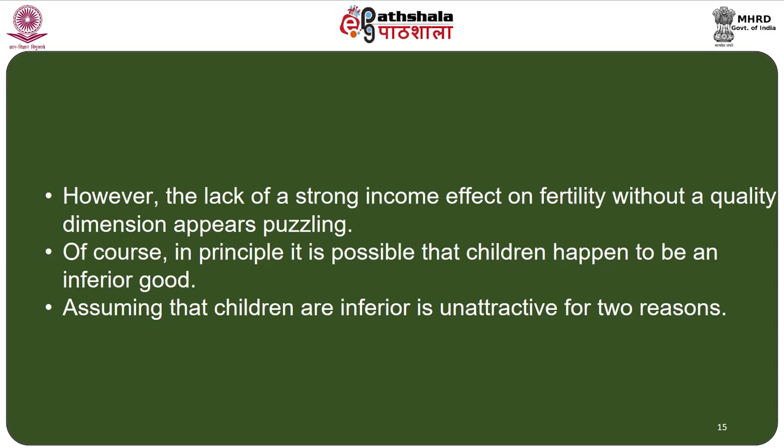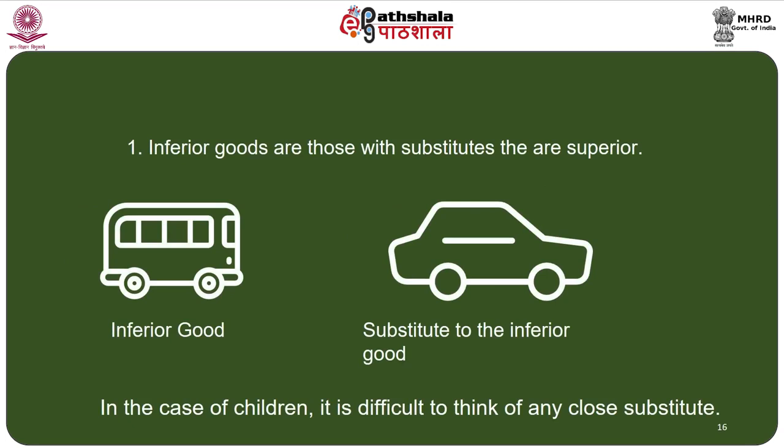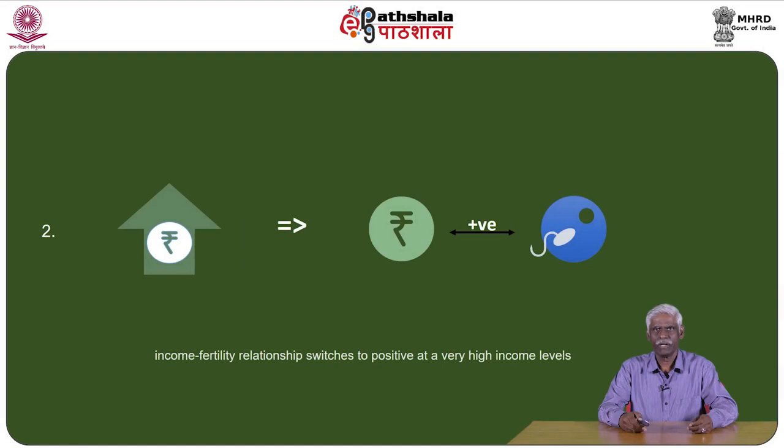The lack of a strong income effect on fertility without a quality dimension appears puzzling. It is possible in principle that children are an inferior good, but this is unattractive for two reasons. First, inferior goods are usually inferior because close substitutes exist — for instance, people buy cars instead of taking buses as they get richer — but for children it is difficult to think of any close substitute. Second, Becker thinks the income-fertility relationship switches to positive at very high income levels, such as among major industrialists like the Birlas and the Tatas.